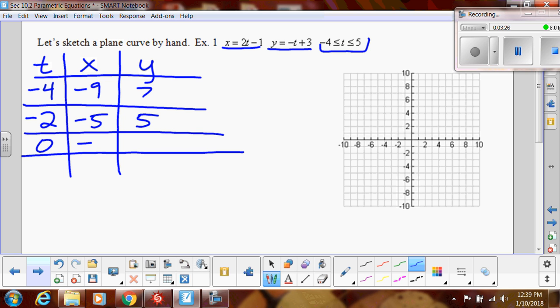So at negative 2, when I plug that in, I would get negative 5, 5. If I plug in 0, I would get negative 1, 3. Plug in 2, I would get 3, 1, and then 4 and so on. And then I'll do the last one so I know where I end up.